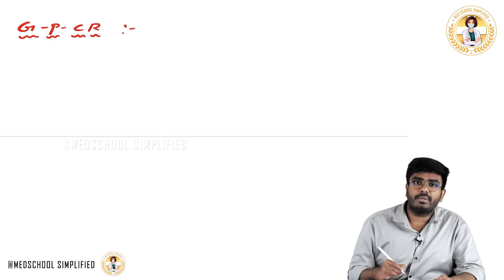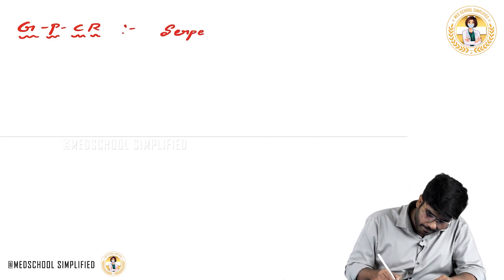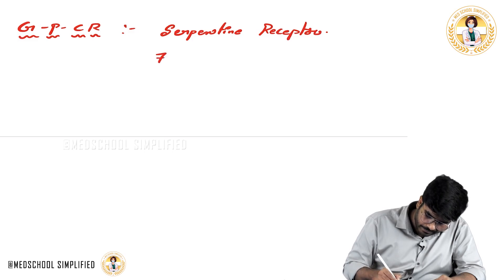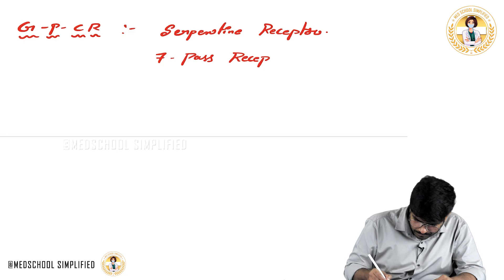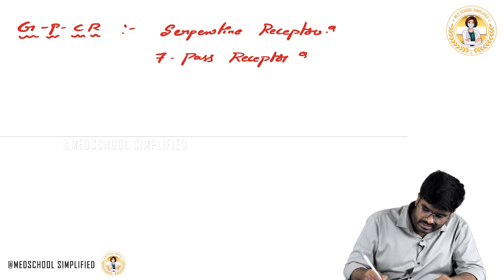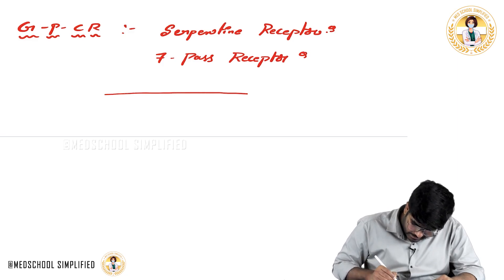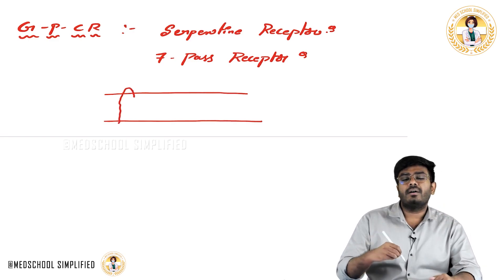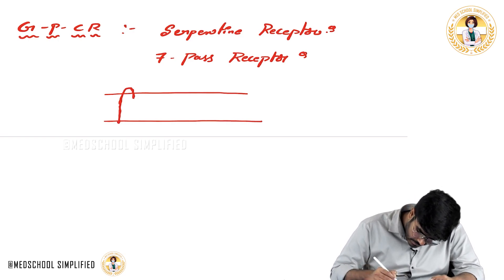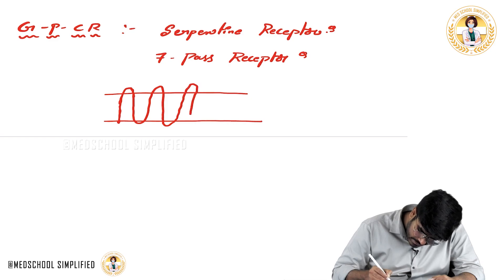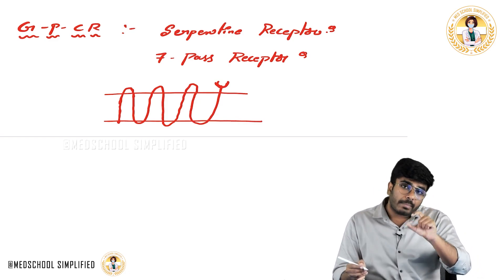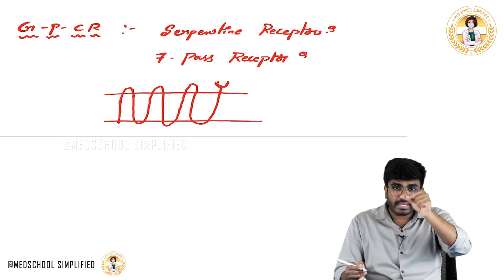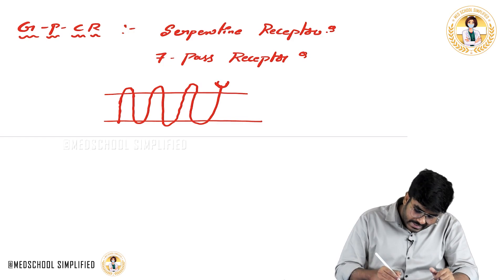The G protein coupled receptor is also known as a serpentine receptor or 7-pass receptor. If I show you the lipid membrane — this is the cell membrane — this receptor has a very funny structure, just like a snake. It passes through the cell membrane 1, 2, 3, 4, 5, 6, and 7 times. So this receptor is passing through the cell membrane 7 times, which is why it is called a 7-pass receptor.